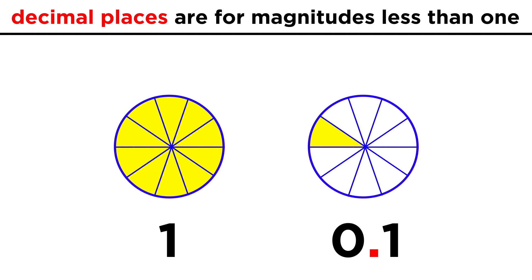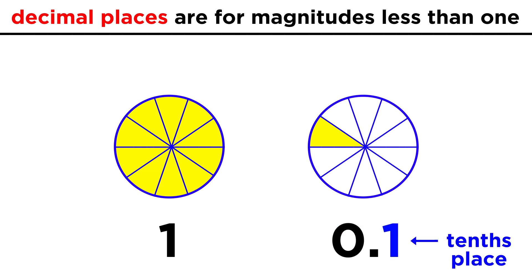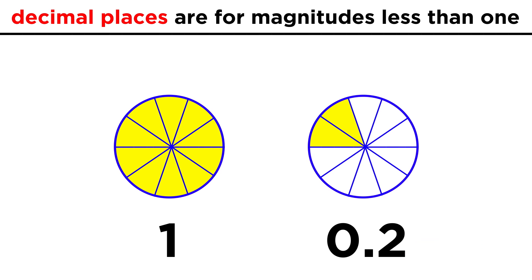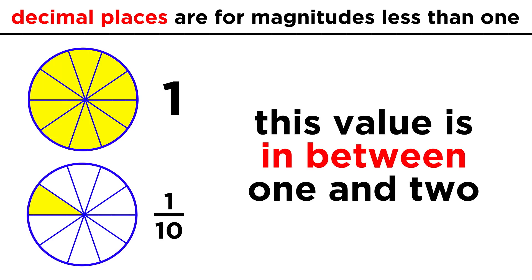This is achieved with the decimal point. Instead of calling one slice one tenth, we can call it zero point one, since this is the tenths place. Two slices is zero point two, all the way up to ten slices, which would give us one whole pizza.